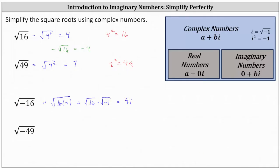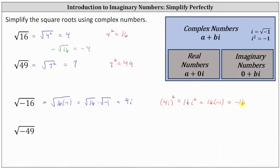Let's check this. If we square four i, we should get negative 16. The square of four i is equal to 16 i squared. Since i squared equals negative one, we get 16 times negative one, which is equal to negative 16.